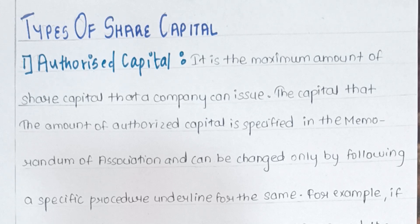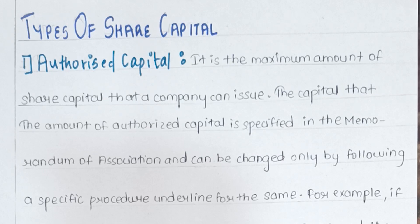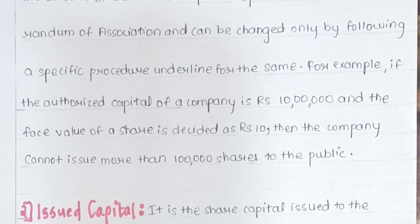Now let's move on to the types of share capital. The first is authorized capital — it is the maximum amount of share capital that any company can issue. This amount is specified in the Memorandum of Association and can be changed only by following a specific procedure. For example, if authorized capital is rupees 10 lakhs and the face value of a share is rupees 10, then the company cannot issue more than 1 lakh shares to the public (10 lakhs divided by 10 equals 1 lakh).